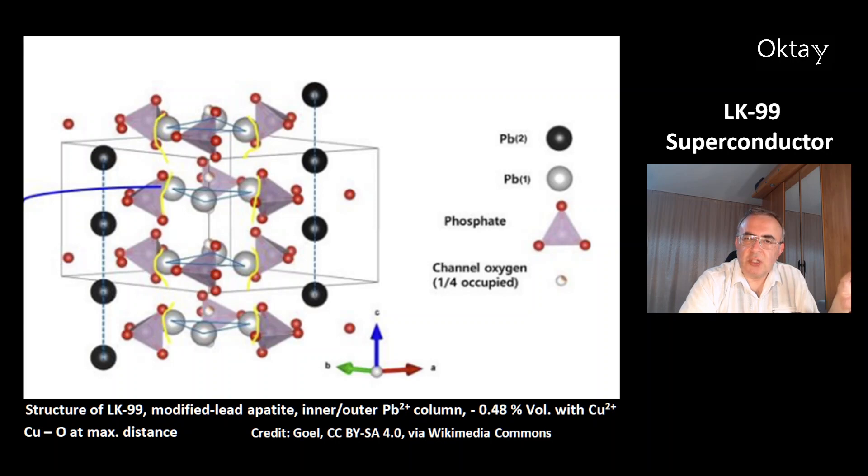This is the structure of LK-99. It's a modified lead apatite structure with a column structure. There are two kinds of lead ions, the outer lead ions in black in this picture, and in gray the inner lead ions. They are separated by the phosphate ions.